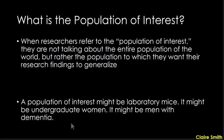A population of interest might be laboratory mice, undergraduate women, or men with dementia — it doesn't necessarily have to be everyone. For example, a study looking at how many women experience sexual assault might use undergraduate women as the population of interest because the researcher is at a college. Even though the study could be done on a larger scale, it can be easier and more practical for the researcher to have a specific population of interest.